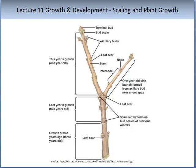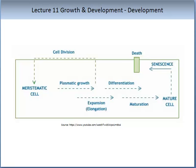Growth can be defined as an irreversible permanent increase in size. Here we have an illustration of the stages of growth of a bud — you can see year 1, year 2 and year 3 growth. It is helpful to differentiate between growth and development. Growth is cell division and cell elongation, while development is the whole process — from germination all the way through the different stages of growth to death, as illustrated on the image on the slide.